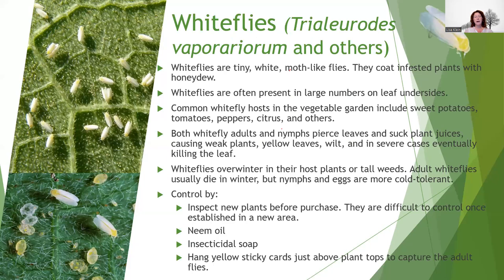Whiteflies are a bigger problem in greenhouses but also a problem in the garden, especially when you bring plants home from a big box store — make sure you inspect them first. They're usually on the underside of leaves and love sweet potatoes, tomatoes, and peppers. They'll suck the juices out of those leaves, stress the plant, and eventually kill the leaves. They overwinter on host plants or in tall weeds, so practice garden cleanup. Nymphs and eggs are cold tolerant, so if you leave that debris behind, you'll get another generation next year. Use neem oil, insecticidal soap, and sticky cards as a presence/absence monitoring tool — when you start seeing them on the cards, it's time to treat.